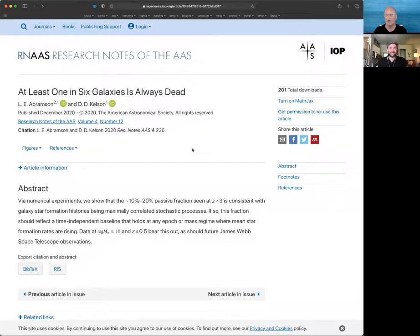That brings us to this very awesome research note with the oh-so-provocative title: At Least One in Six Galaxies Is Always Dead. Lewis, take us away. Provocative titles seem to be a trademark of mine. You can see my co-author Dan Kelson is also not a shy bird, so we were happy to make this bold claim, but we're very eager for folks in the audience to go test it.